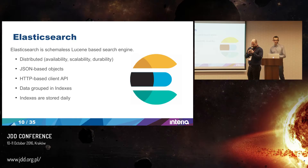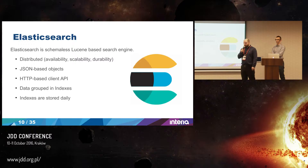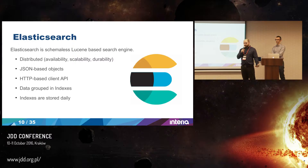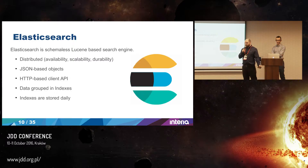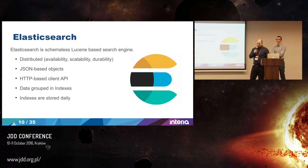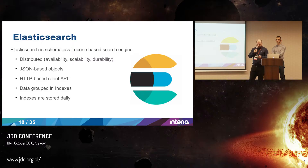After Logstash, there is Elasticsearch. For me it's a simple search engine based on the Lucene library from Apache Java. It's very scalable and durable — you can have multiple Elasticsearch nodes and be sure that no data is lost when some node goes down. Elasticsearch stores objects in JSON. You have access to these objects from a simple HTTP-based client API. The data is organized into byte indexes. Logstash stores one index per day.